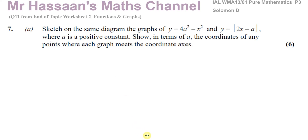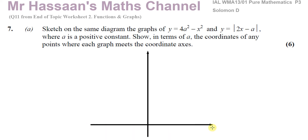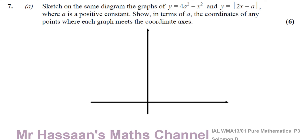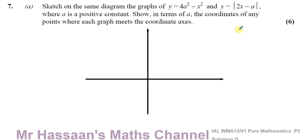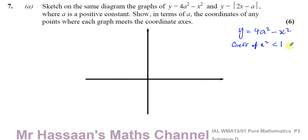I'll make my y-axis and my x-axis. I can see that neither of these graphs will go below the x-axis — well, actually the first one will, as it opens downward. So I'm going to arrange my axes accordingly. Let's start with the quadratic: y equals 4a squared minus x squared. This graph is a quadratic with a negative coefficient in front of x squared, so it's going to be a frowny face — an upside-down parabola.